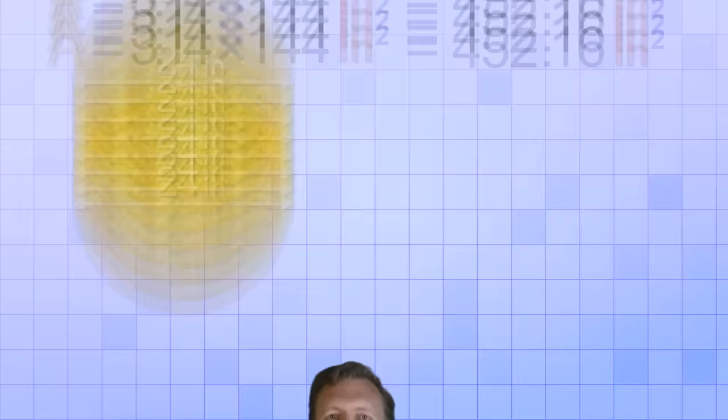Alright, so now you know how to find the circumference and the area of any circle. All you need to do is remember the formulas: circumference equals Pi times diameter, and area equals Pi times radius squared. But it's really important to practice using these formulas for yourself. So be sure to try some of the exercise problems. That's the way to really learn math. Thanks for watching Math Antics and I'll see you next time.